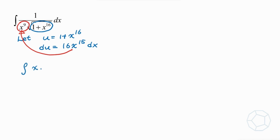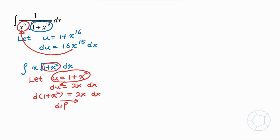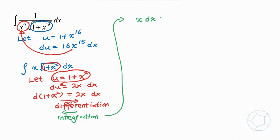Let's consider a simpler integral: x times square root of 1 plus x squared, dx. We'll use the substitution: let u equal 1 plus x squared, then du is 2x dx. If we put u equal to 1 plus x squared inside the differential, we have d(1 plus x squared) equal to 2x dx. Viewed from right to left, this is the reverse of differentiation — which is integration.